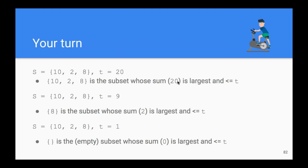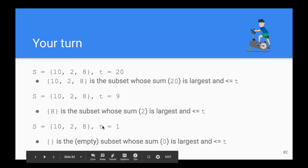For the target 9, we obviously cannot have 10. We can have 2, but 2 is not that close to the target of 9, so we can do better. If our subset has 8, that's pretty close to 9, although not exactly 9. If our target is 1, again we cannot include any of the items. The empty subset is the best we can do that is under the target.